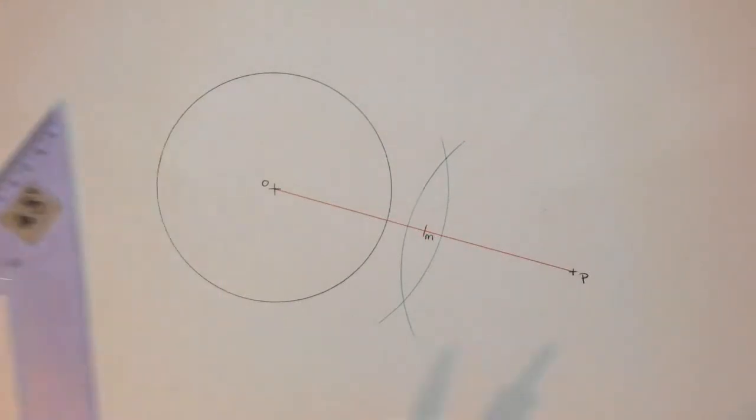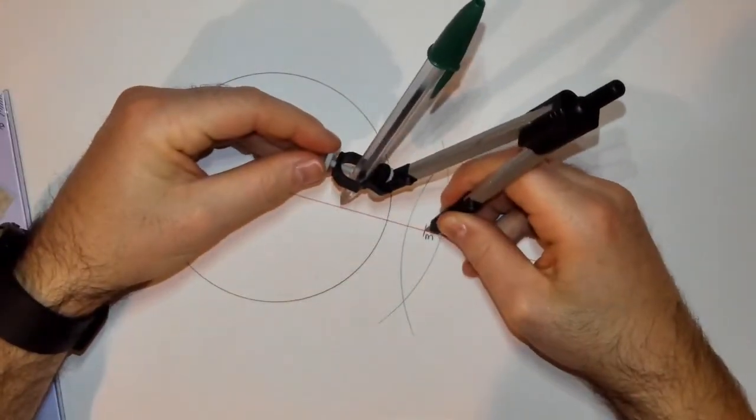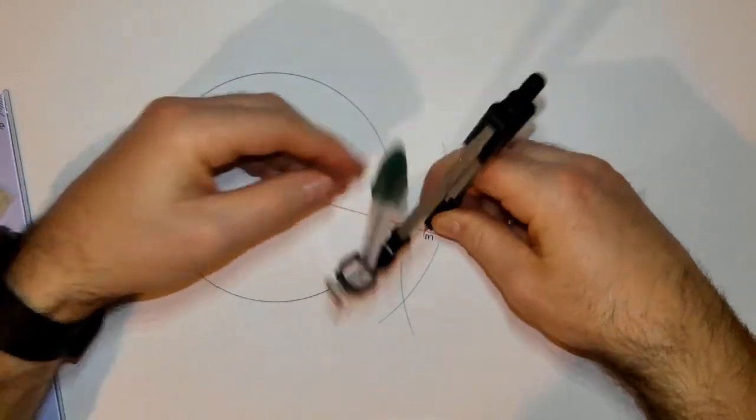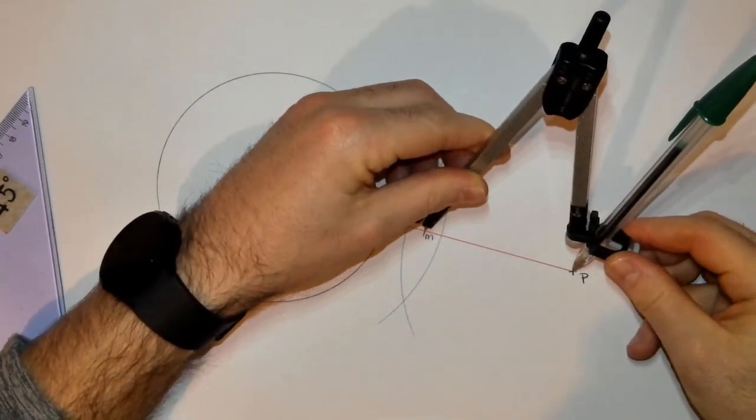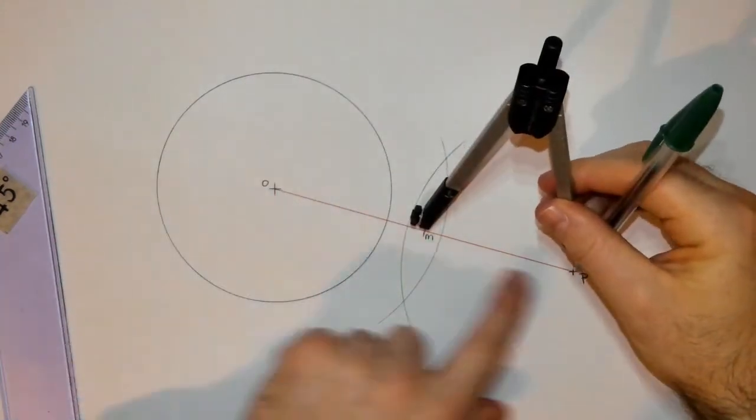The next step is to take your compass, put it on the midpoint of the line, and set your radius to the distance of P. So I'm taking half the distance of the line O to P, with M in the middle.